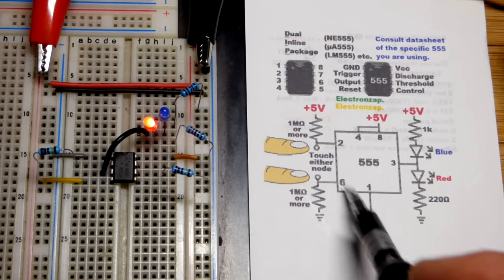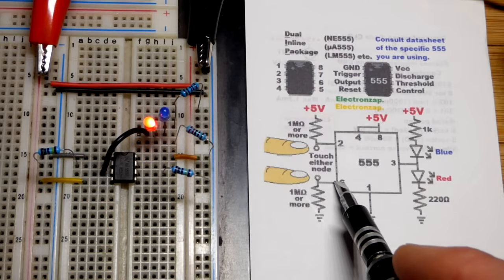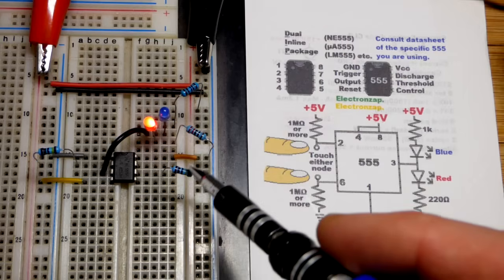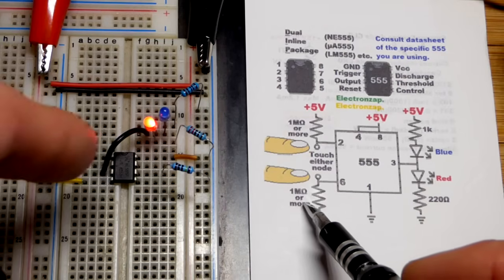To set the output back low, we could reset pin 4 to ground, but instead, we got pin 6. So pin 6 has to go to two-thirds or higher supply voltage. It has a pull-down resistor, so it's keeping zero volts at pin 6.